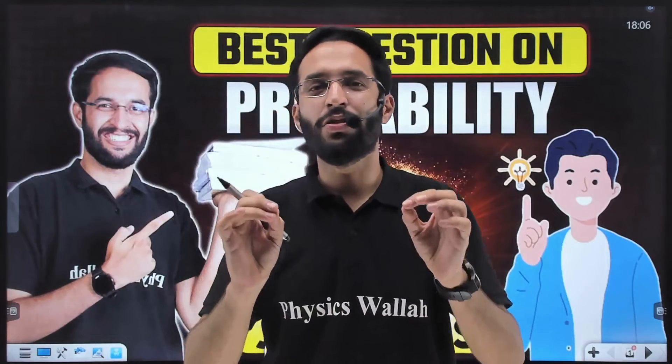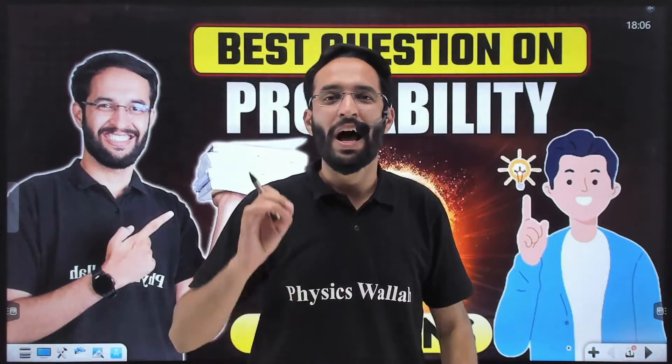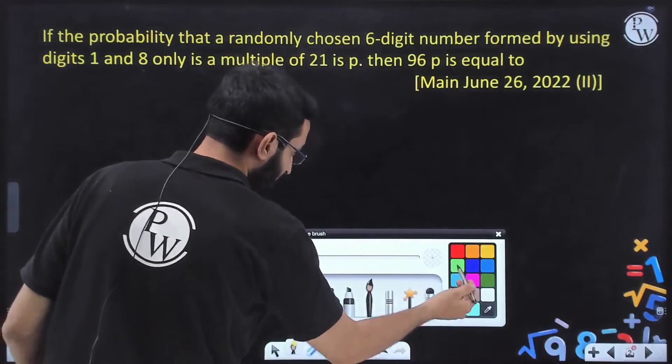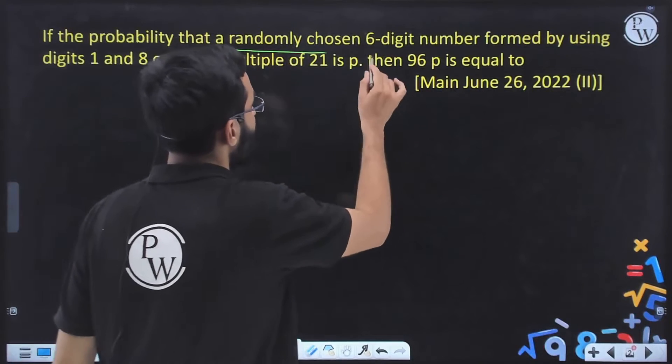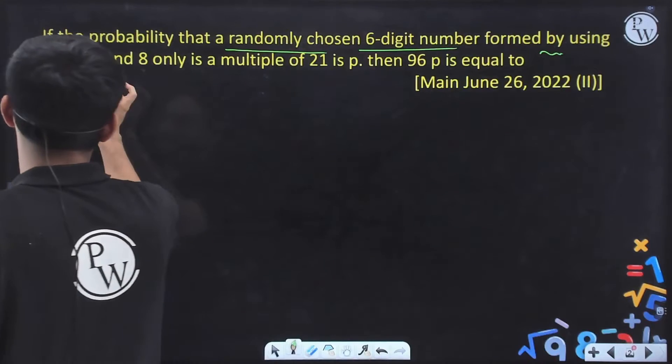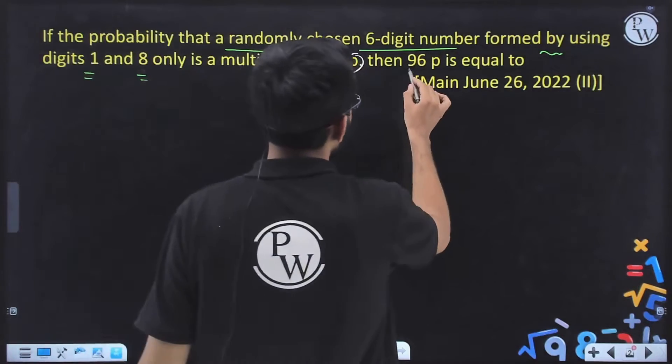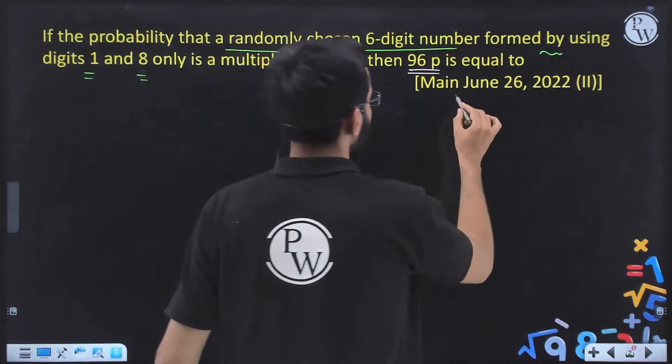Hello students! In today's video I am going to show you one very good question of probability. This question was asked in JEE Mains 2022. You will be amazed to know that in 98% of resources — online as well as offline — the solution is not being explained properly. Today I am going to give you the detailed solution. The question states: if the probability that a randomly chosen six-digit number formed by using digits 1 and 8 only is a multiple of 21 is small p, then find the value of 96p. This was asked in the second shift of 26 June 2022.